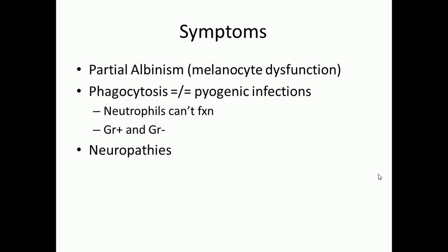Phagocytosis requires microtubules for its function, so when you have a mutation affecting microtubules, you're going to have more frequent pyogenic infections — more frequent gram-positive and gram-negative infections like Staph and Strep.